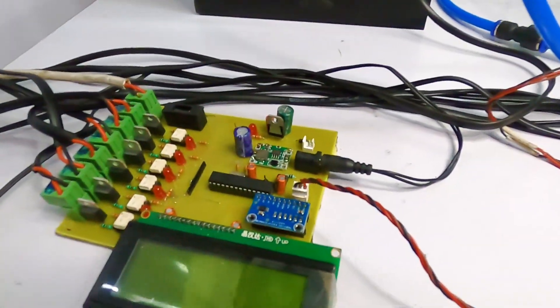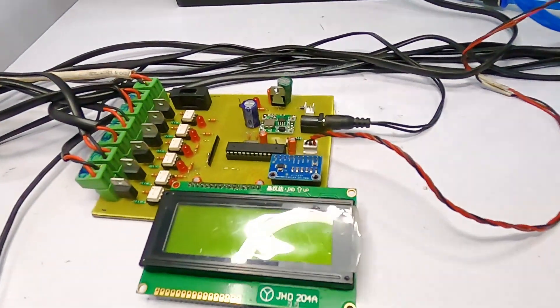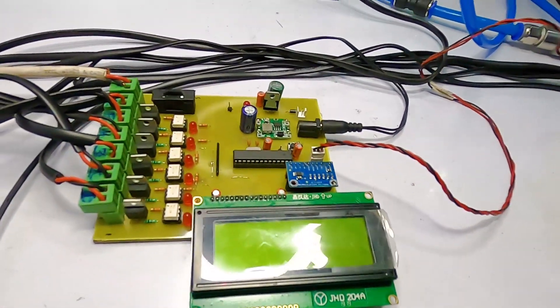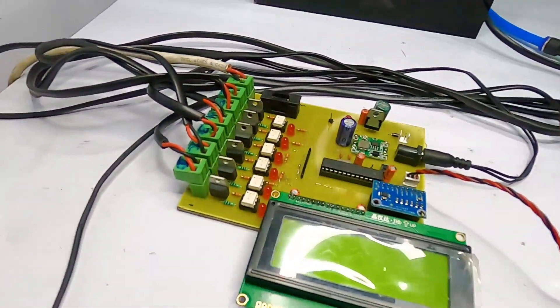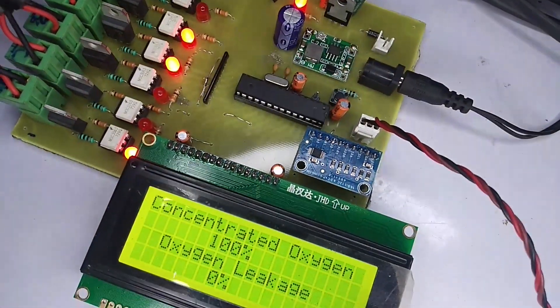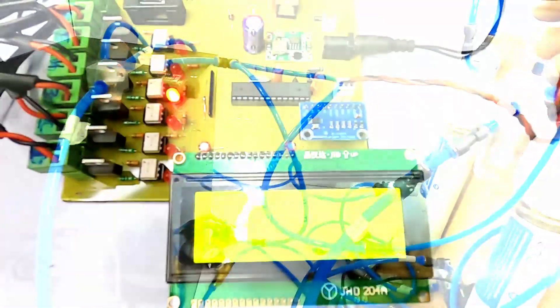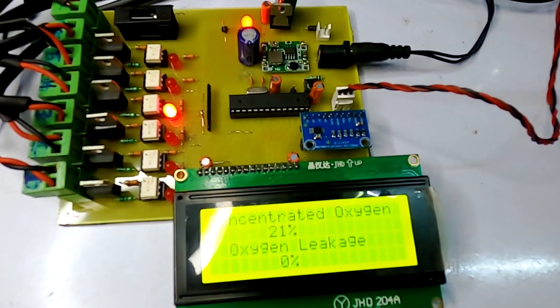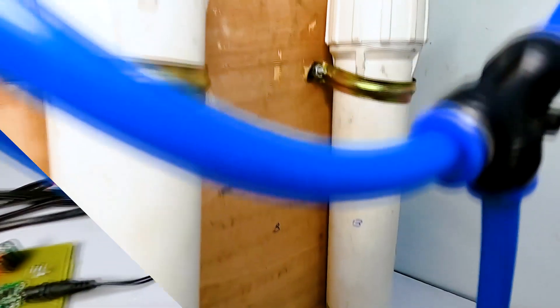Now this is the main circuitry. This is used to control the entire operation of the oxygen generator. This is used to control all the valves which are used to drive the air through the entire process. So this is how we control the entire operation of the system.